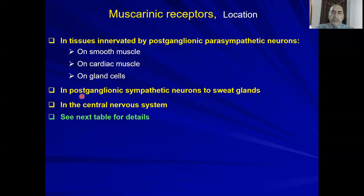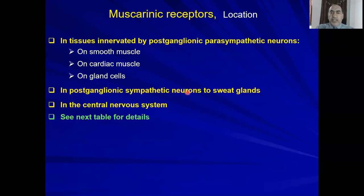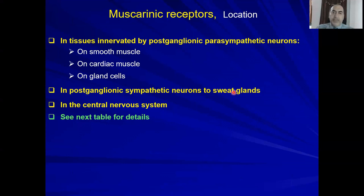There is an exception: the sweat gland. The nerve to the sweat gland starts as sympathetic — it is thoracolumbar. But the post-ganglionic neuron at the end releases acetylcholine, which acts on muscarinic receptors. So the nerve is sympathetic but releases acetylcholine and the receptor is muscarinic M3.